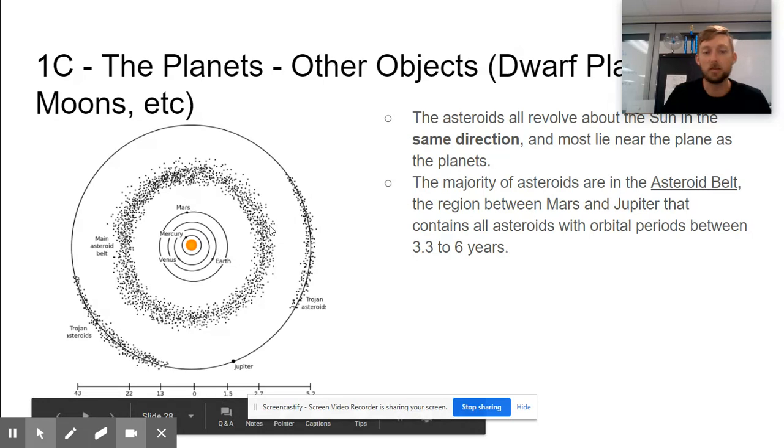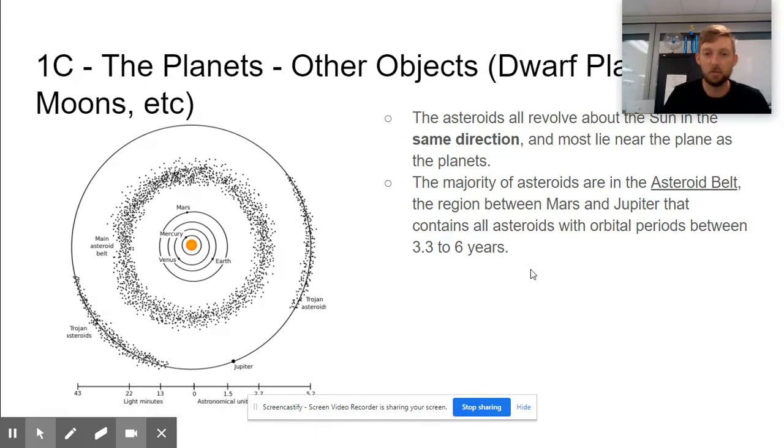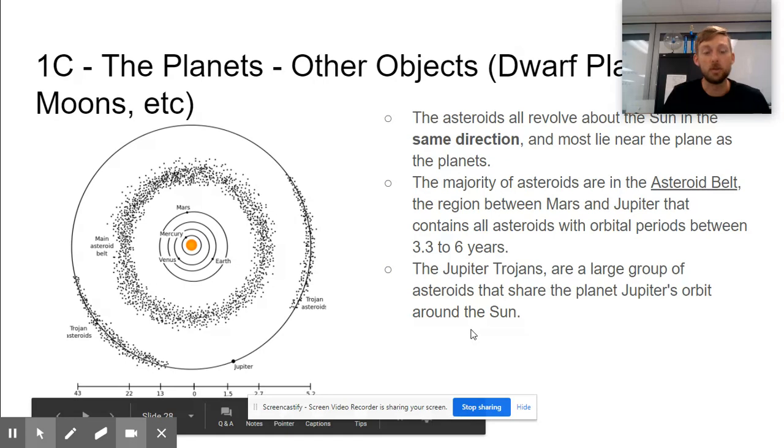There are other asteroids in our solar system, some of which are called the Jupiter Trojans. This is a group that shares Jupiter's orbit. You see Jupiter down here—this is Jupiter's orbit around the sun.